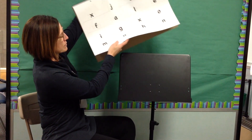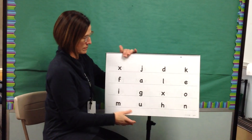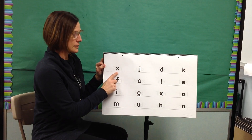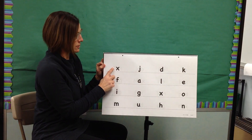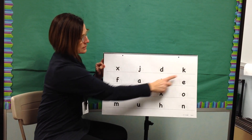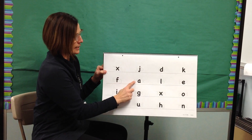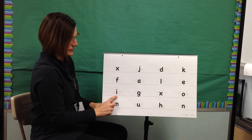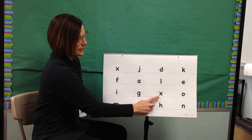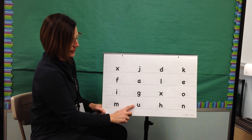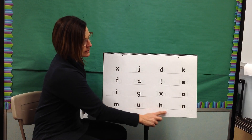Next, we will look at some letters and say sounds for each letter. I will model the first two. My turn. Sound: S. Sound: J. Your turn. Sound: X. Sound: D. Sound: F. Sound: O. Sound: J. Sound: I. Sound: G. Sound: O. Sound: A. Sound: H.